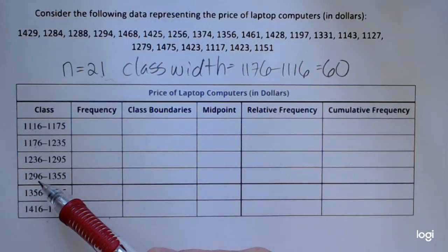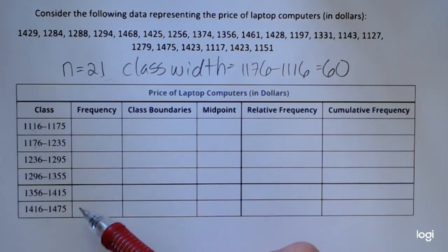So the class width is 60, and you could take two different consecutive lower class limits or upper class limits, and you would still get a class width of 60.